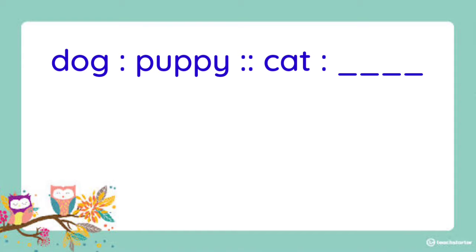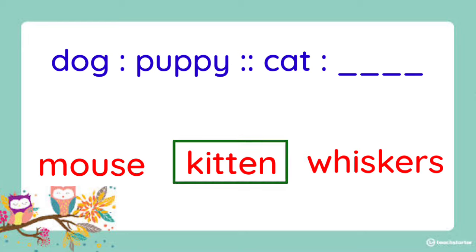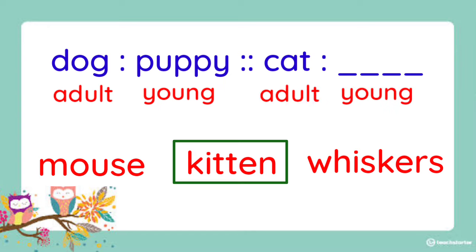Another one. Dog is to puppy as cat is to blank. Is it mouse, kitten, or whiskers? The answer is kitten. Because puppy is what we call a baby dog. So to complete the set, we have to look for the word used to name a baby cat. And it is called kitten.